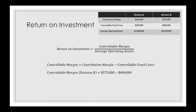Then for Division B, we take the contribution margin of $575,000 and subtract out the controllable fixed costs of $400,000, to find that Division B's controllable margin is $175,000.